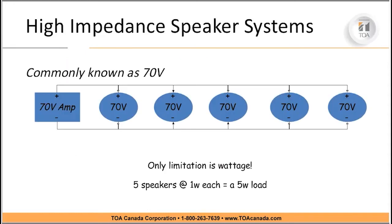With a high impedance or 70 volt system — as we call it here in North America — the only thing you have to take under consideration on your speaker line is the wattage. In our example here, we have five speakers tapped at one watt each, so we have a 5 watt load and the impedance remains constant at 70 volts, at a high impedance.